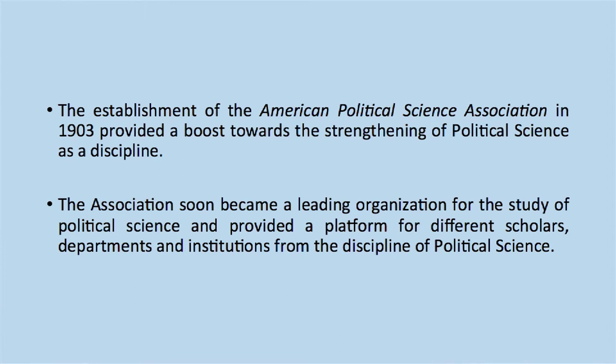The studies and research carried out in these universities also widened the scope of political science, which was earlier confined to the study of political institutions and historical origins. The subject of political science subsequently began to embrace various concepts like rights, justice, law, and sovereignty while analyzing the functioning of governments. The establishment of the American Political Science Association in 1903 provided a boost towards strengthening political science as a discipline, and it soon became a leading organization for the study of political science, widening its scope beyond political philosophy and institutions.